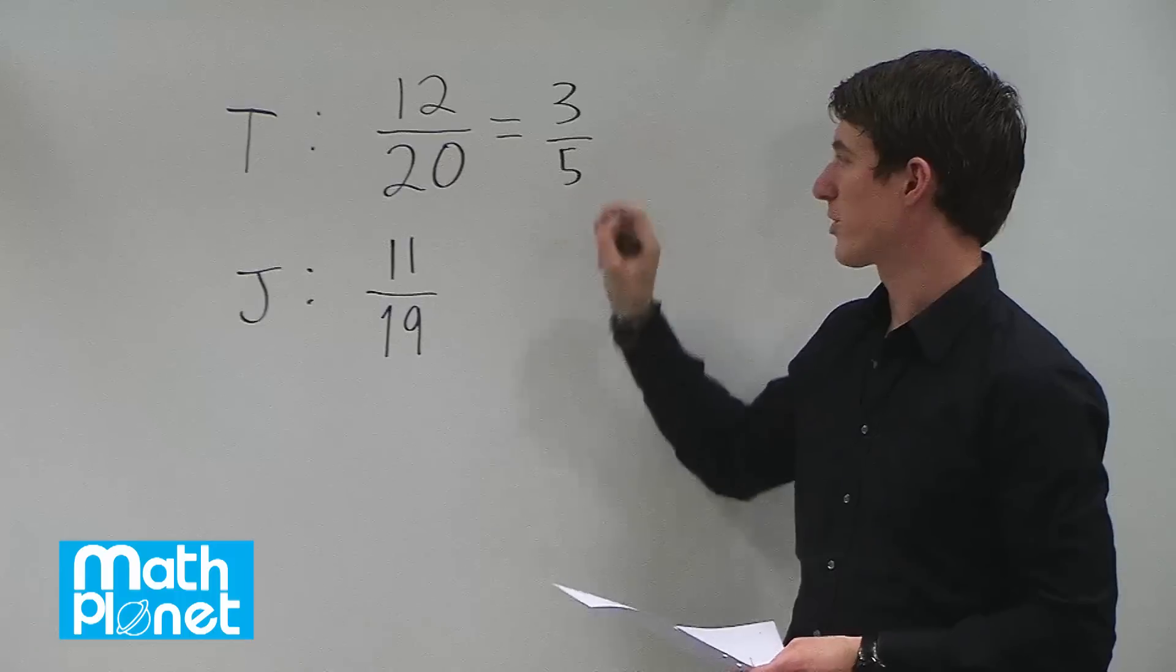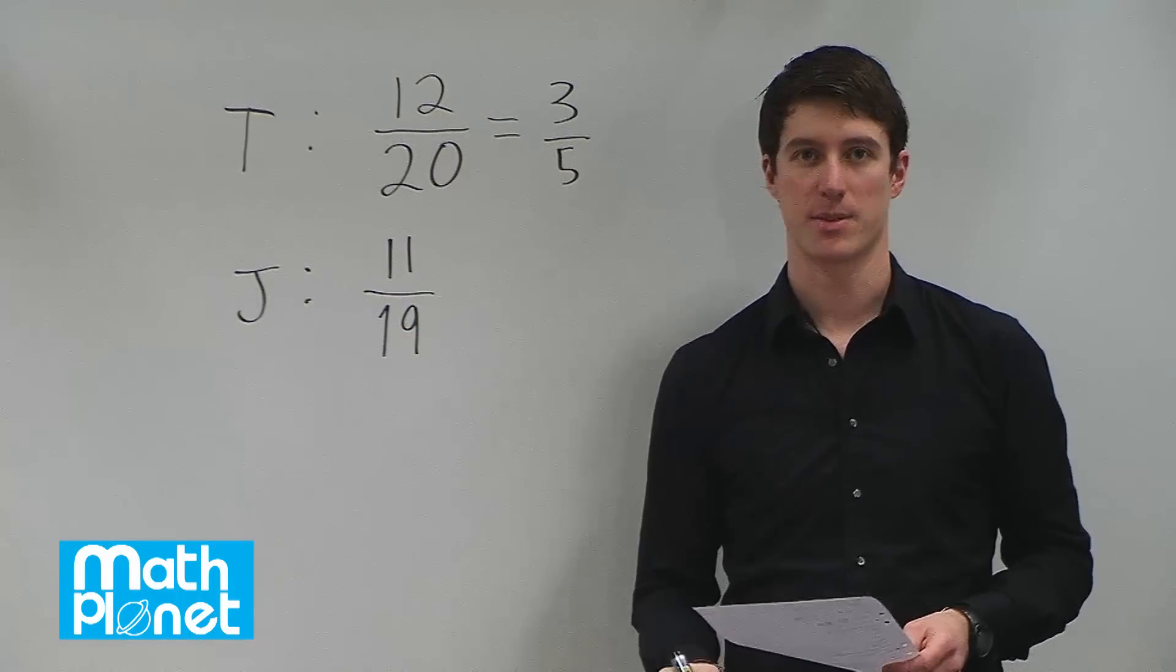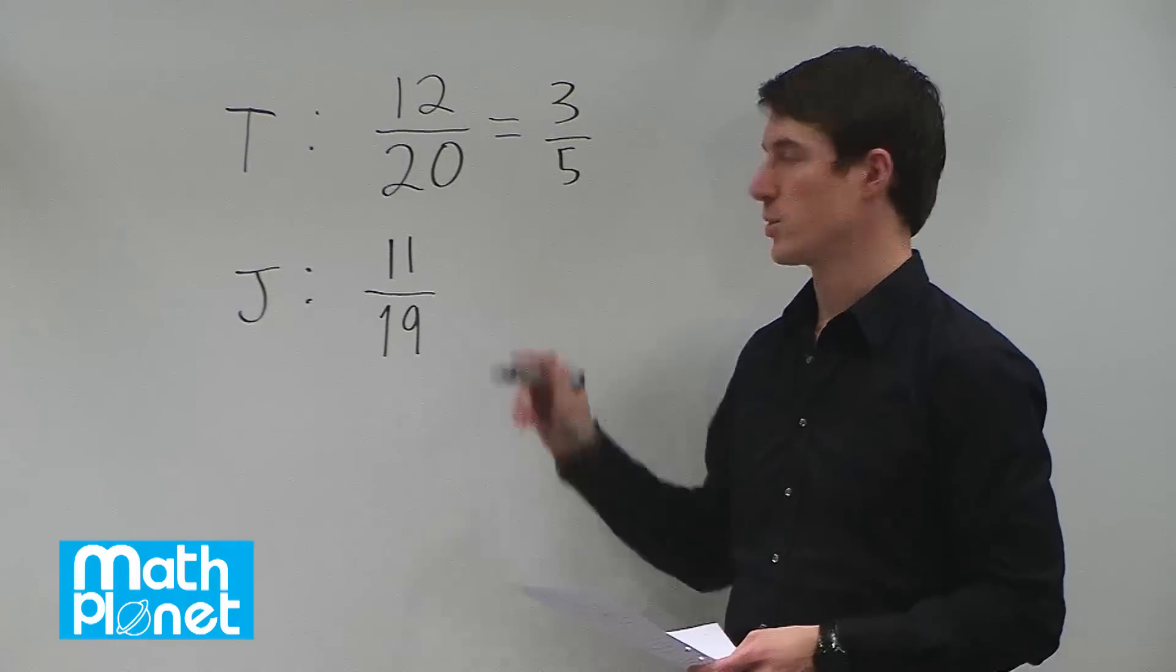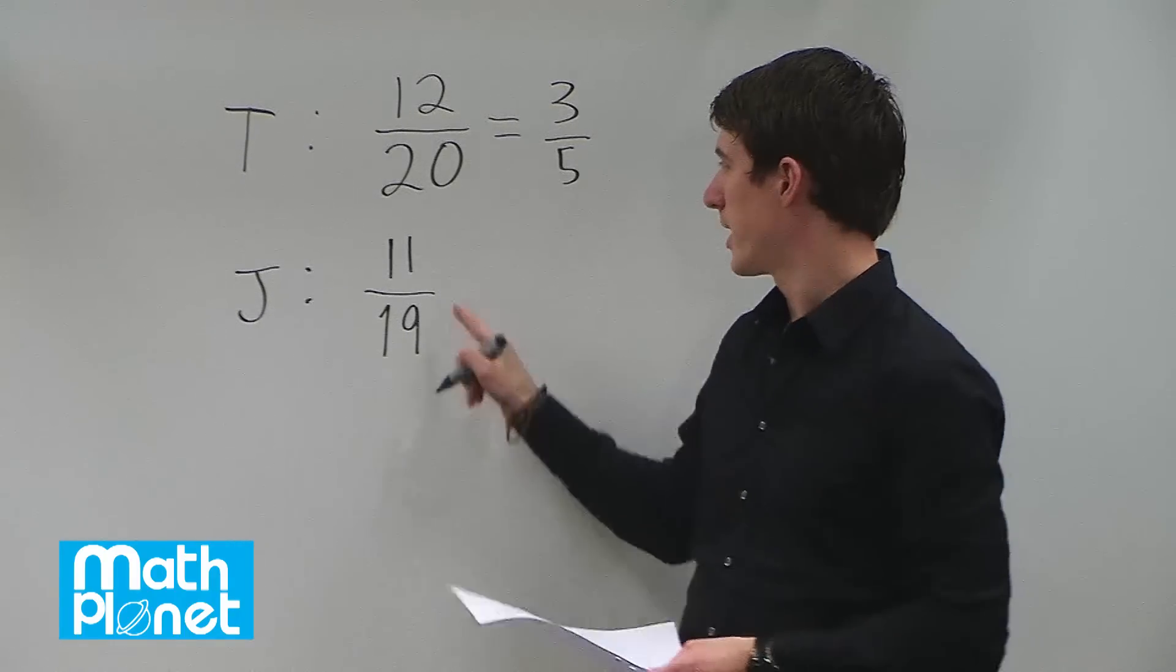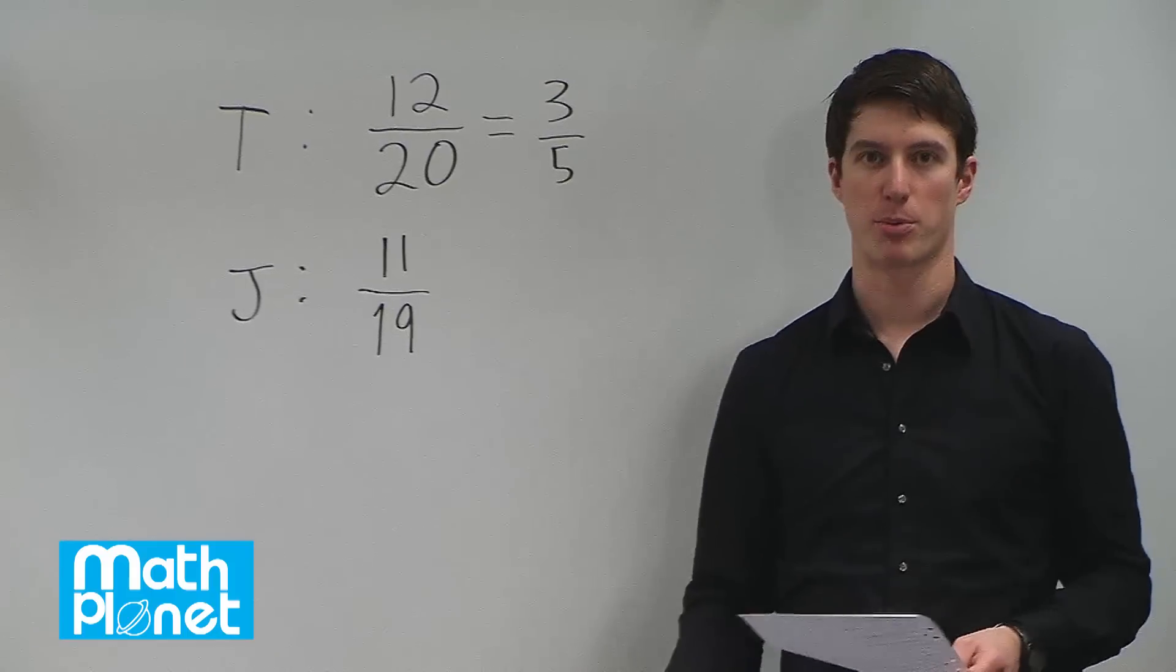So the probability for Tina is 3 fifths, the probability for James is 11 nineteenths. The probability for both of them to have gotten that extra chocolate bar is just the product of these two probabilities.